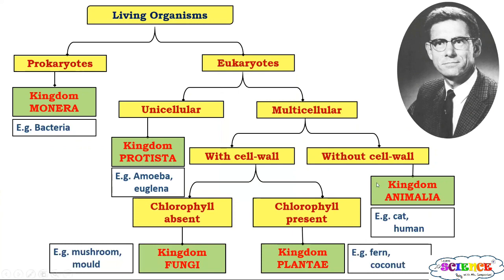This is the five-kingdom classification given by Robert Whittaker in 1969. The five kingdoms are: Kingdom Monera which includes bacteria; Kingdom Protista which includes all protozoans like amoeba and euglena; Kingdom Fungi which includes mushrooms and molds; Kingdom Plantae with all green plants; and Kingdom Animalia which includes cats, humans, and other animals.